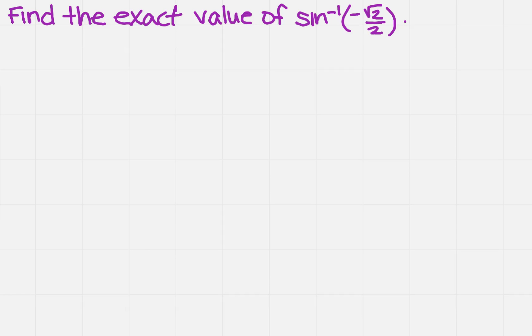Find the exact value of the inverse sine of negative square root of 2 over 2. What is that asking? It's asking me to find the inverse value of sine. So how am I going to do that?